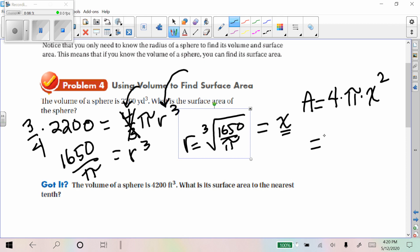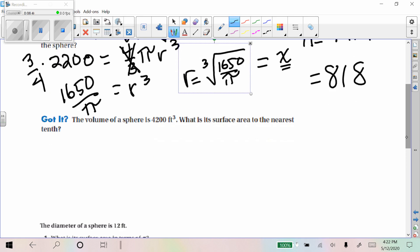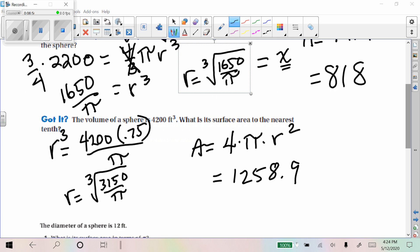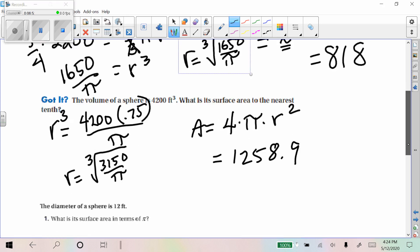All right. And here's what I get when I do that. And when I did that, I ended up with about 818. All right. Why don't you try one of those, see if you can make it work out for you. All right. There's what I got for that.